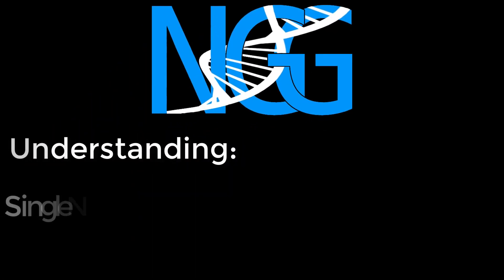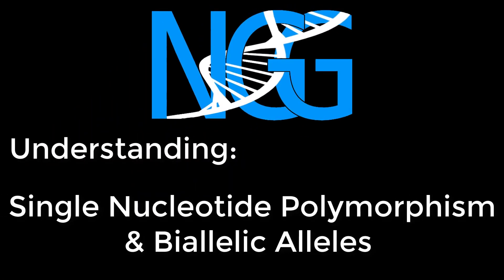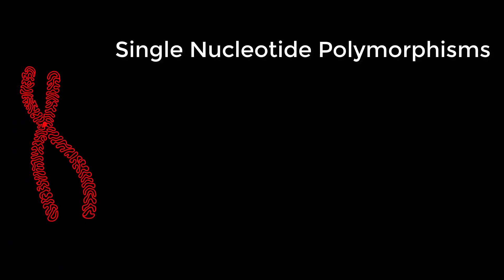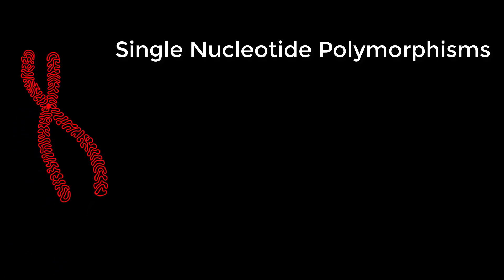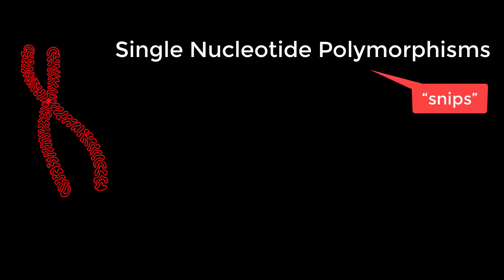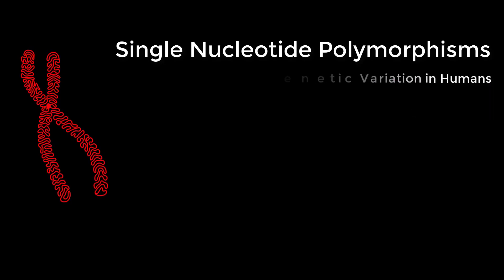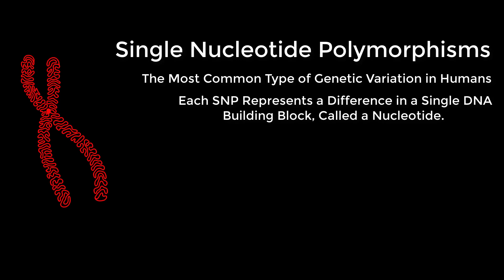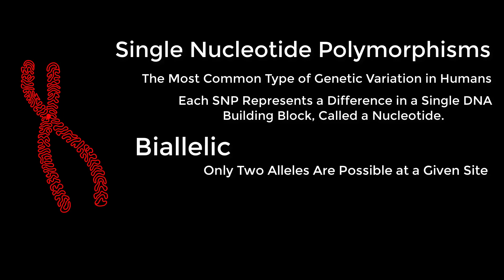Understanding single nucleotide polymorphisms and biallelic alleles, or simply the term biallelic. Starting with the basic descriptions given to us by the Genetic Home Reference, it defines single nucleotide polymorphisms — more commonly referred to as SNPs — as the most common type of genetic variation among people. Each SNP location represents a single nucleotide variation, and these SNP locations occur once in every 300 nucleotides on average in human DNA.